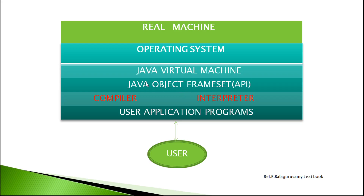So this Java Object Framework is the intermediate between the user and the Java Virtual Machine. The operating system of the Java Object Framework acts as the compiler and interpreter. So what is the Java Virtual Machine? It is the intermediate layer in the overall system.